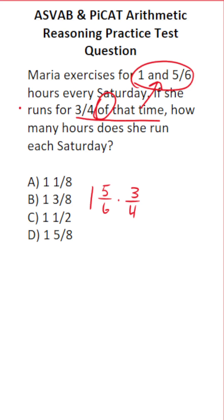In order to multiply two fractions, I first have to convert this mixed number to an improper fraction. How do I do that? One times six plus five. One times six is six plus five is 11. So this is 11 over 6 times 3 over 4.